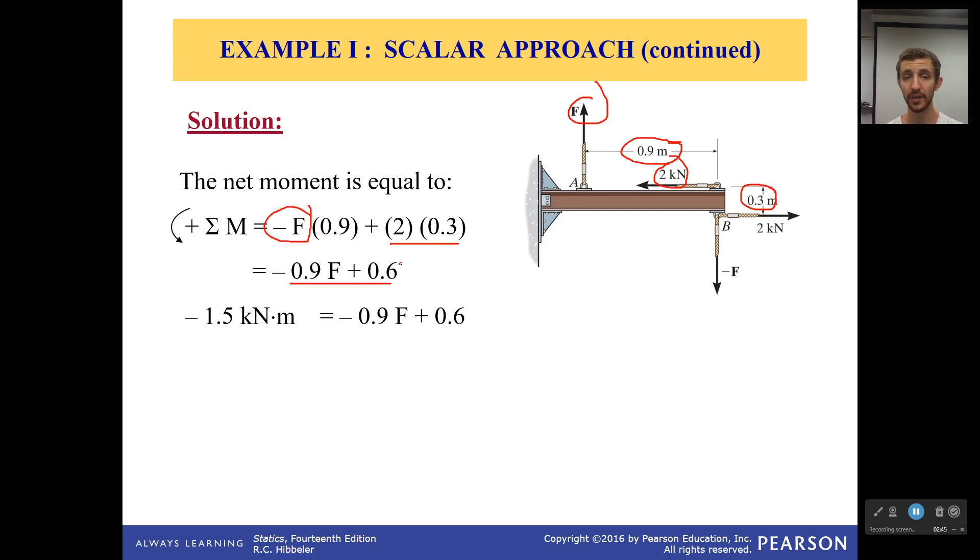And I have a little equation which is equal to my sum of moments, which the problem statement said was going to be equal to negative 1.5 kilonewtons. Now, I said 1.5 kilonewtons, so be very careful you don't forget that negative sign, because it said 1.5 kilonewtons clockwise, and I've said that counterclockwise is positive, so I have to change that sign.